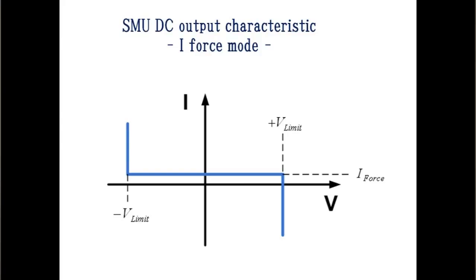Today, I'll use B2911A precision source measure unit. This figure shows DC output characteristic of this SMU when it is set to I force mode. From minus V limit to plus V limit, output current is constant. Force current value can be set to 0mA and this means input resistance value is very high and current flowing into the DUT is very low.